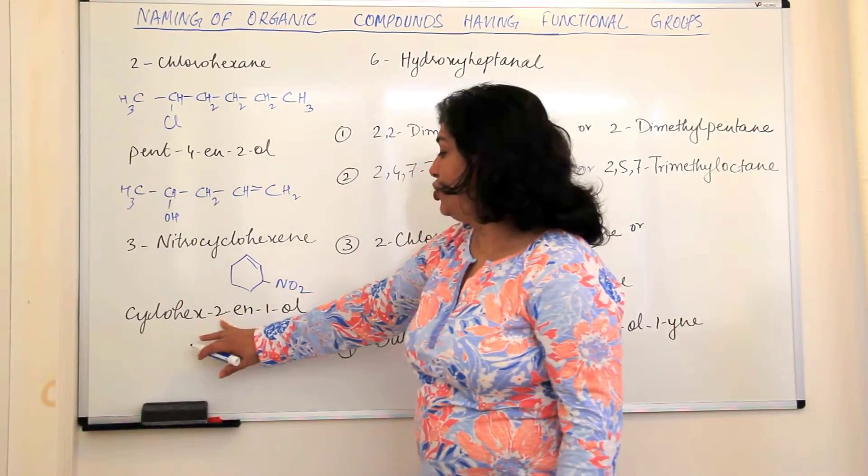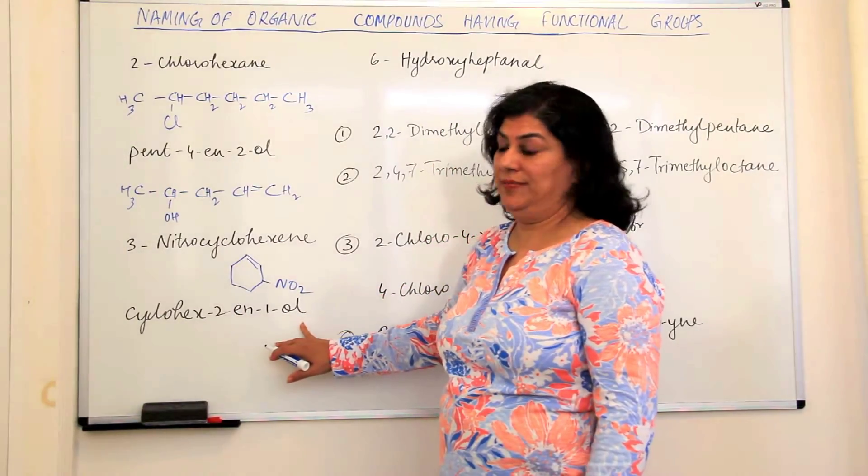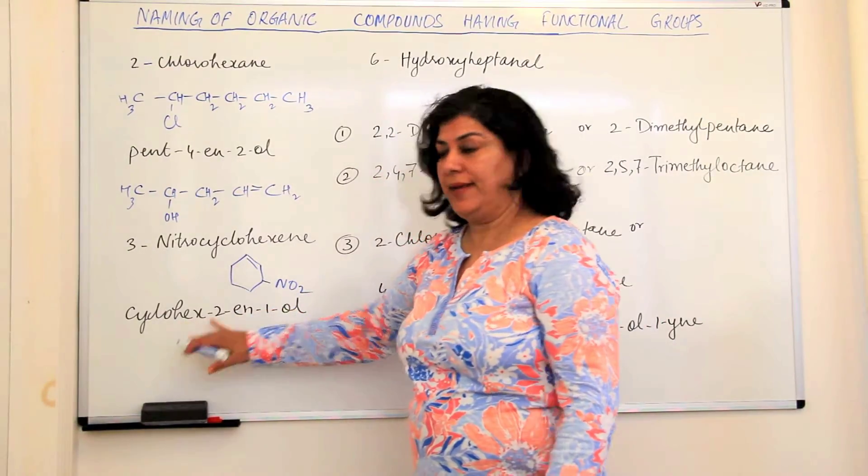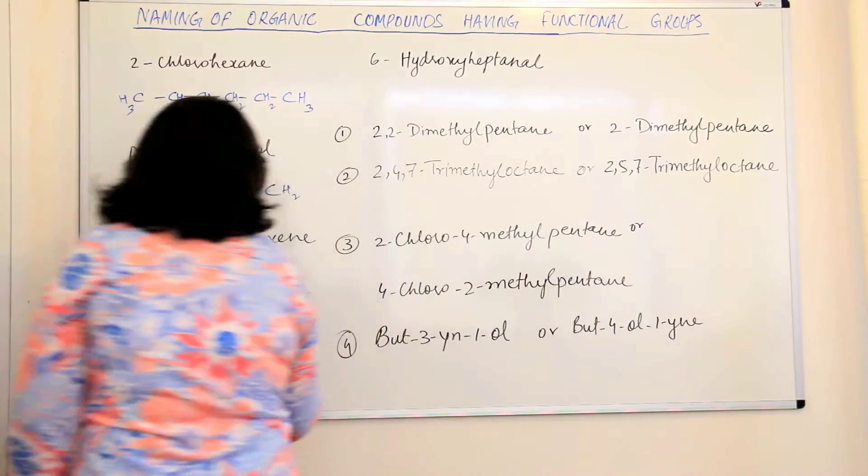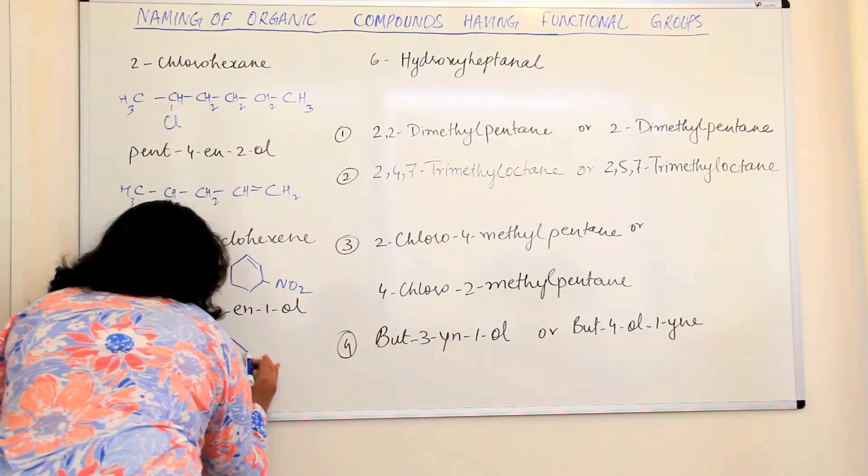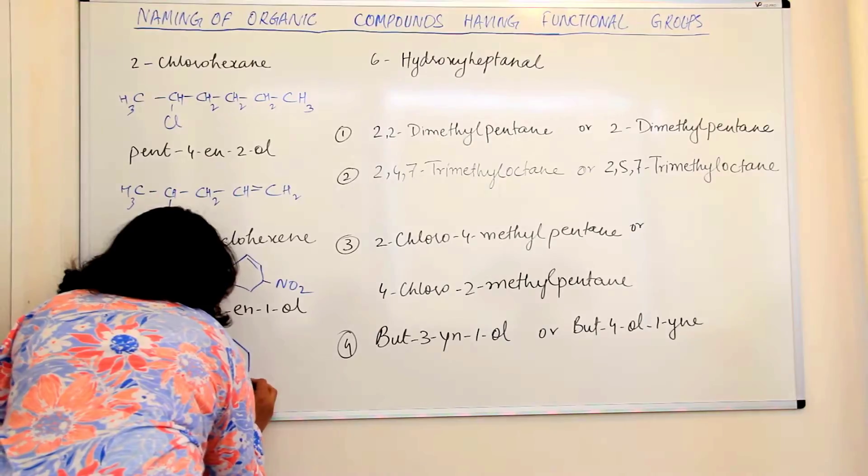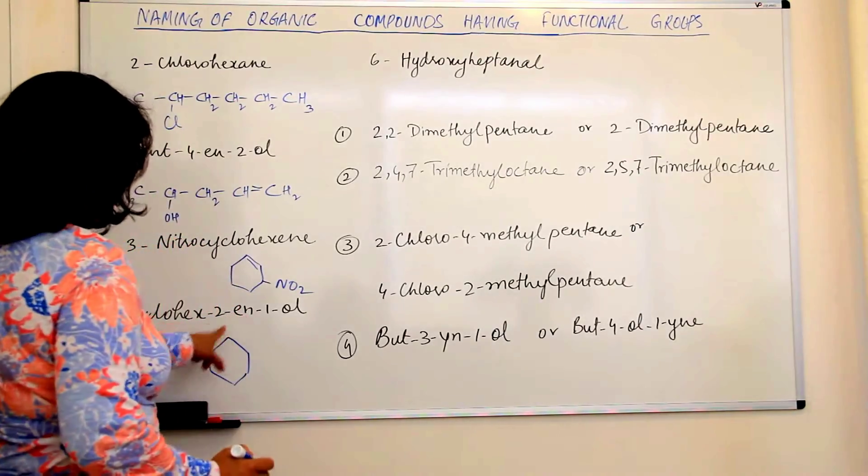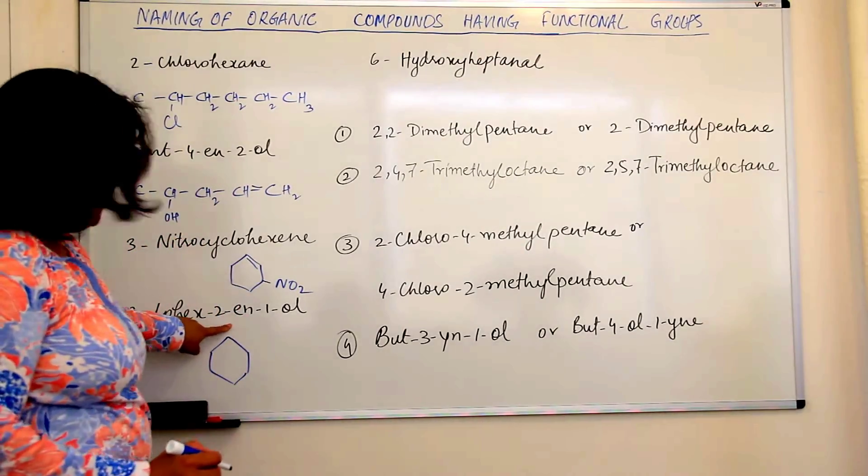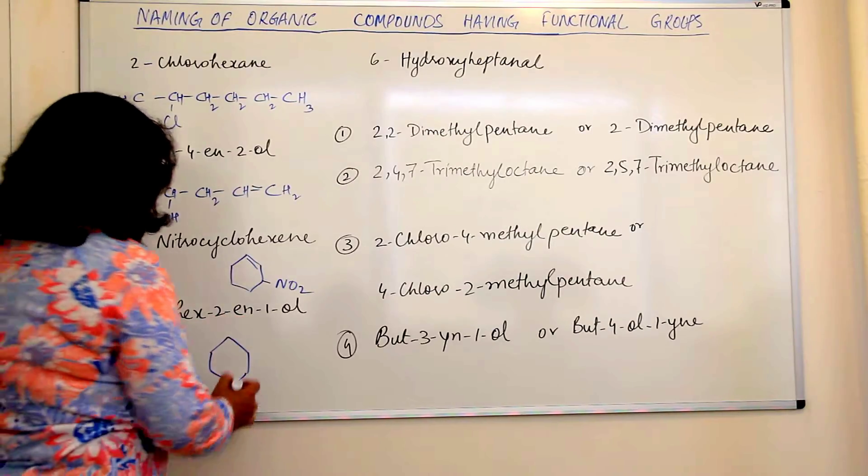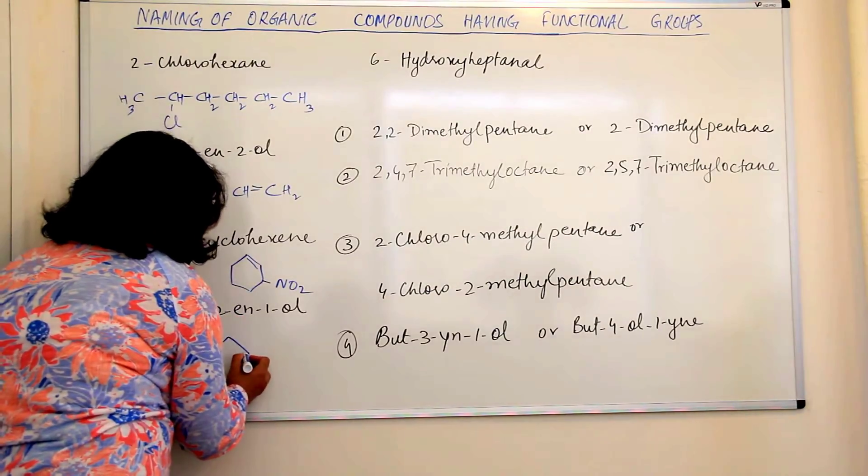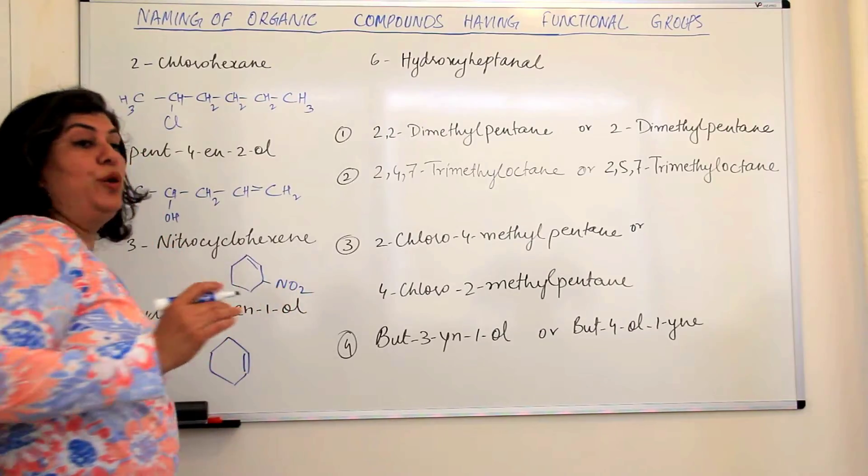Next problem: Cyclohex-2N-1-all. Cyclohex - again, make cyclohex. Second carbon, I'll assume the top one to be the first carbon. The second carbon has a double bond. So first carbon, second carbon, double bond is second carbon.